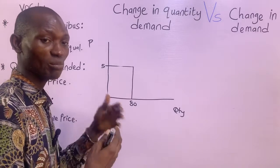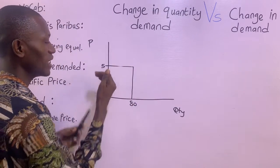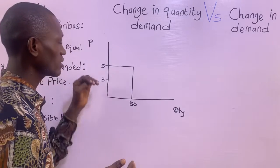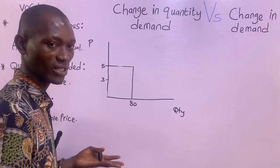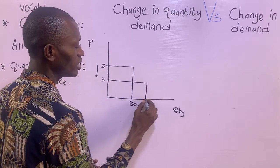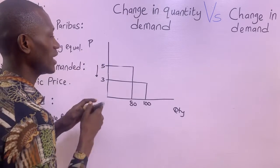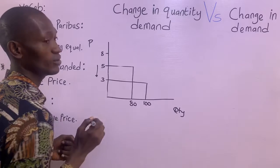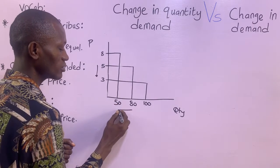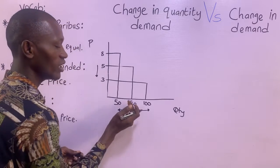We all know that the price of commodities changes — it rises or falls. So let's assume the price of this marker drops from five to three. We all know the normal law of demand: the lower the price, the higher the quantity demanded, Ceteris Paribus. So the price drops from five to three, and that led to an increase in the quantity demanded for this marker — let's say 100 units. And on the contrary, the price of the marker rises from five to eight, and here we're going to have a decrease in the quantity demanded — let's say 50 units.